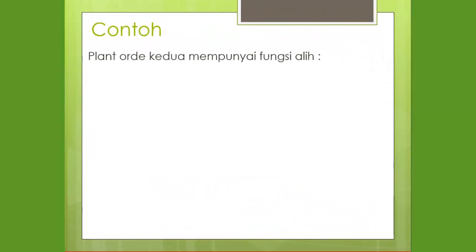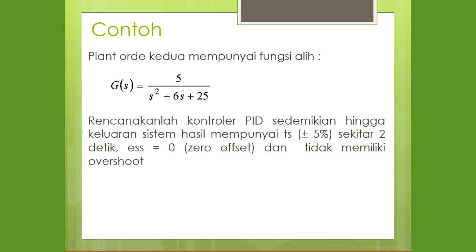Contoh: misalkan plan order kedua mempunyai fungsi alih G(s) = 5 / (s² + 6s + 25). Pertanyaannya adalah, rancang kontrol PID sedemikian sehingga keluaran sistem hasil mempunyai settling time 5% sekitar 2 detik dan steady-state error 0 (zero offset).